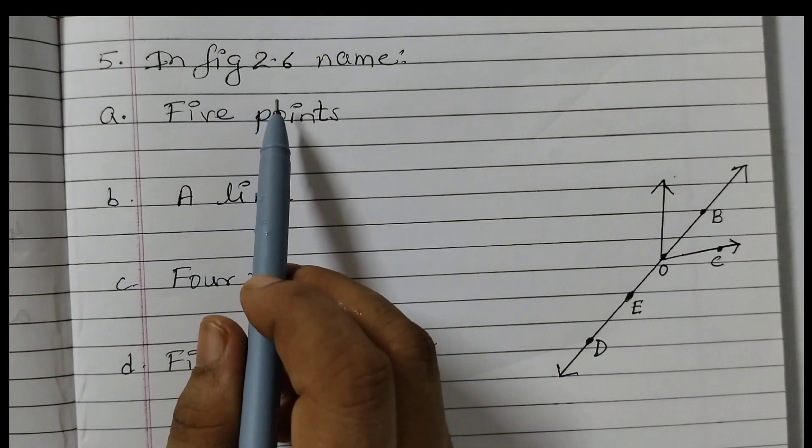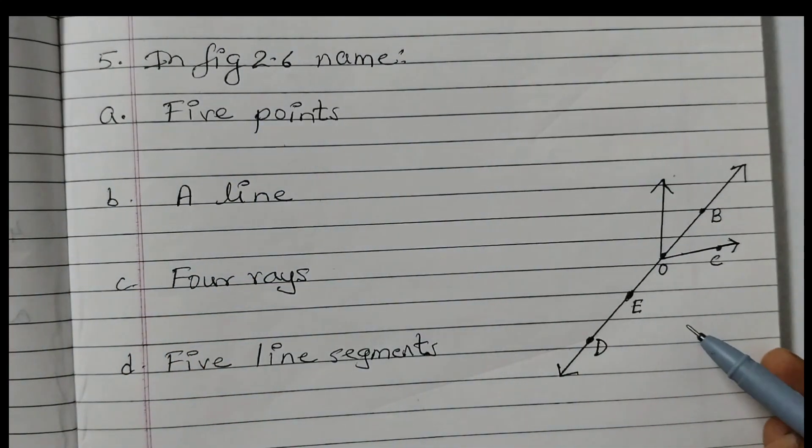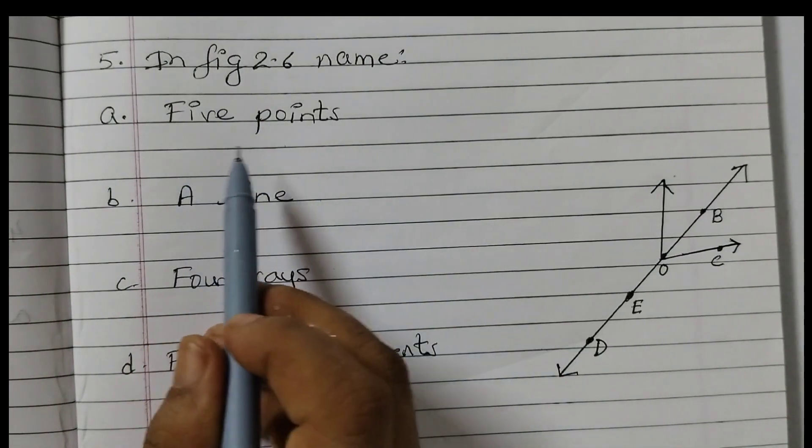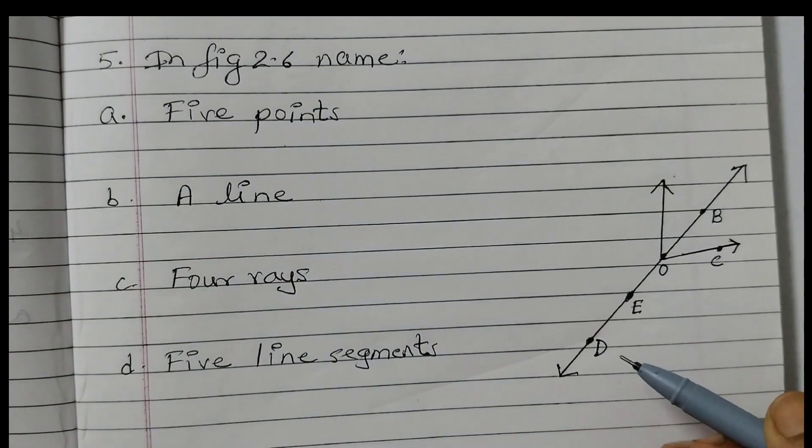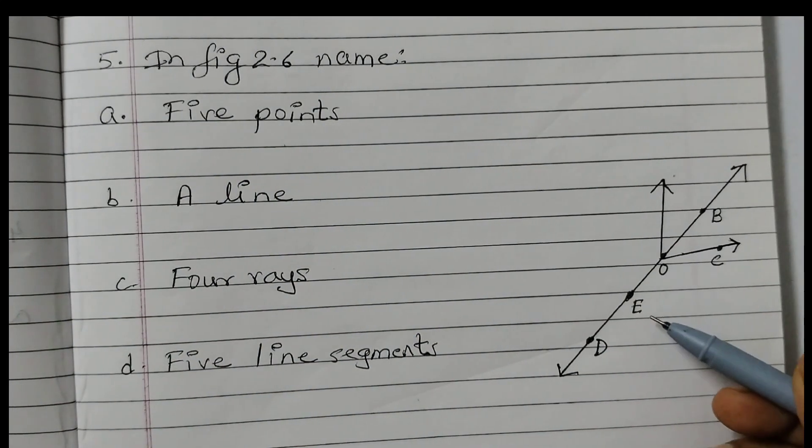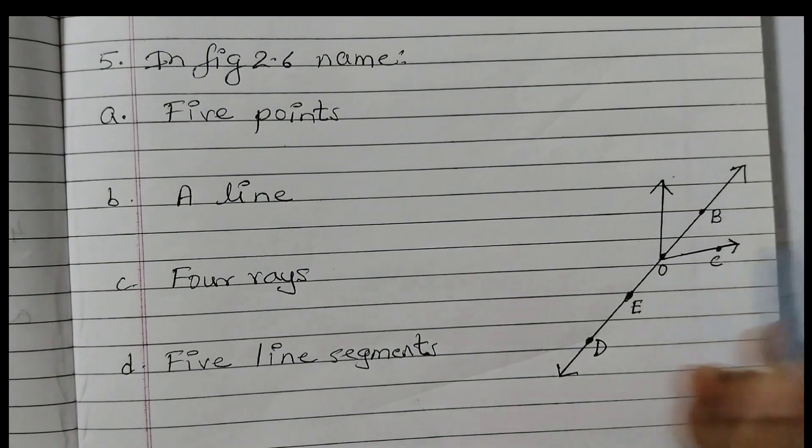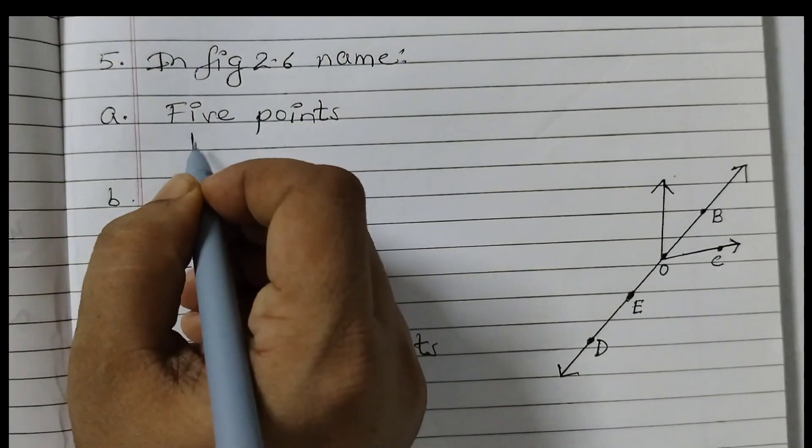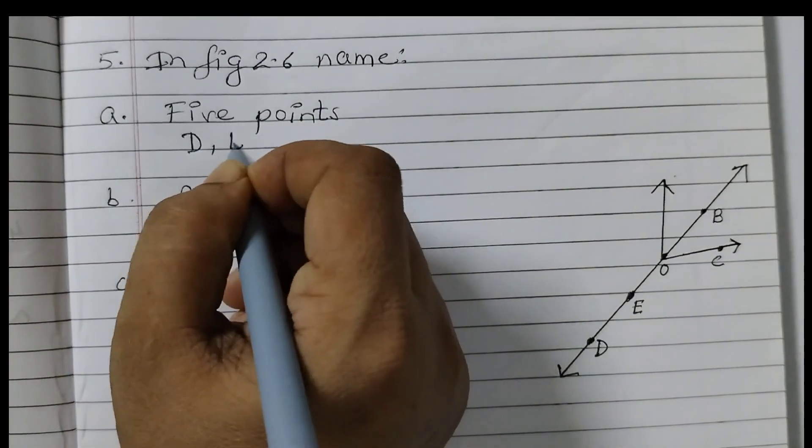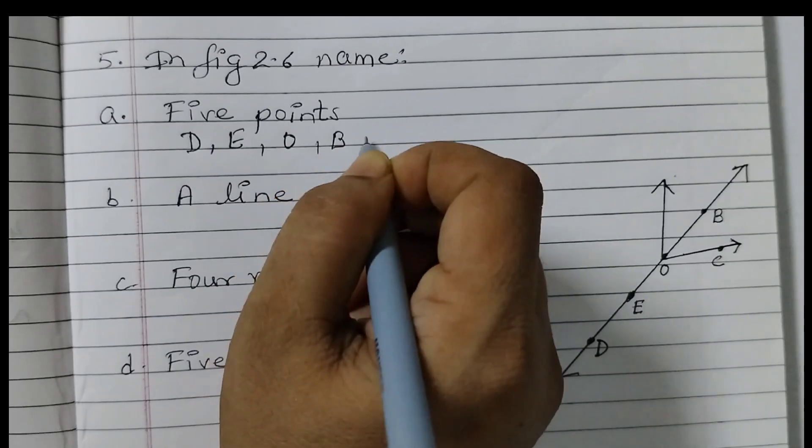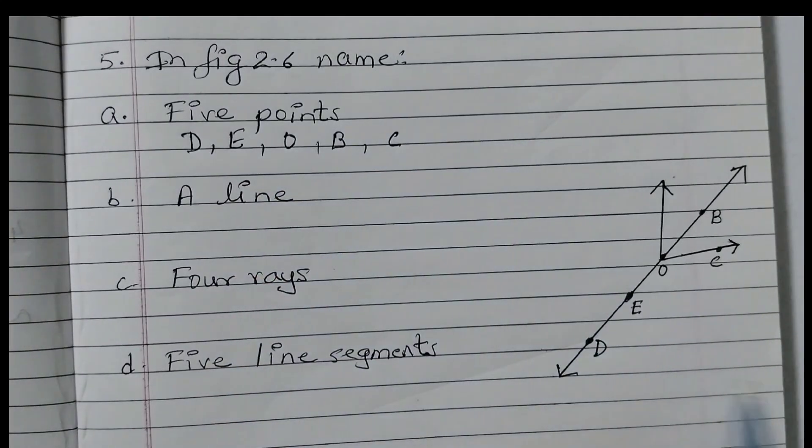Question number 5. In figure 2.6. This is figure 2.6 in the textbook. Name five points. So we can see here the points D, E, O, C, B. So we will write point D, E, O, B, C. Five points.